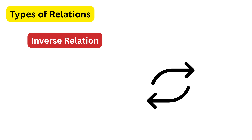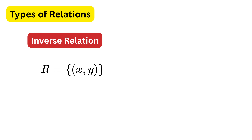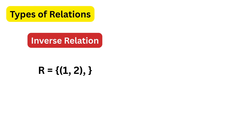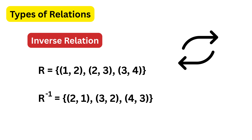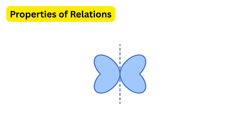Next up we have the inverse relation, which is just flipping the pairs of a given relation. So if in a relation x is related to y, in the inverse relation y will be related to x. For example, imagine a relation where the ordered pairs are 1 comma 2, 2 comma 3, and 3 comma 4. The inverse relation will simply flip each pair, so the ordered pairs become 2 comma 1, 3 comma 2, and 4 comma 3. This shows that everything is inverted and it is still a valid relation.